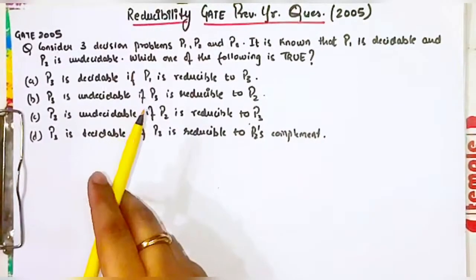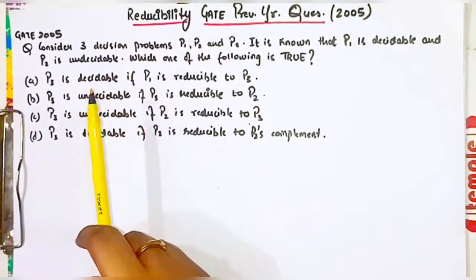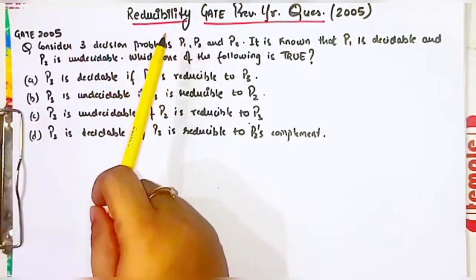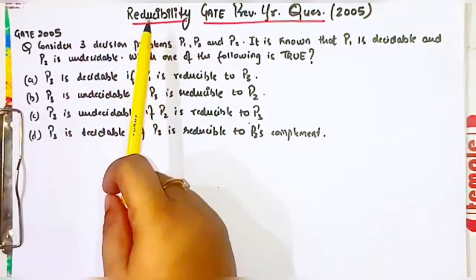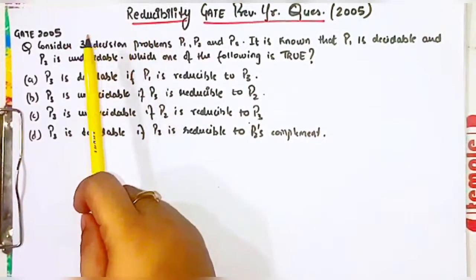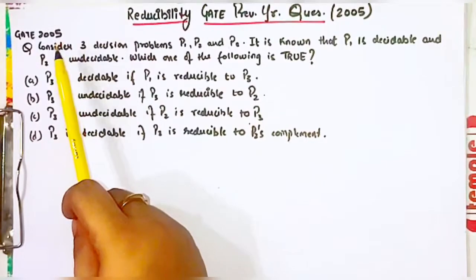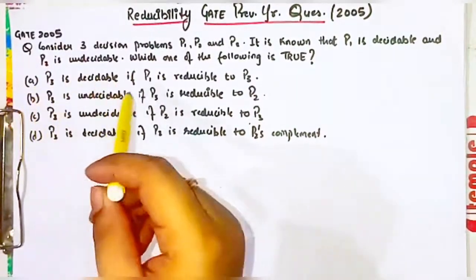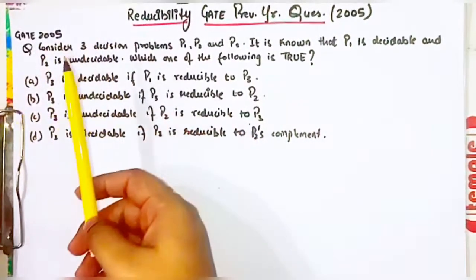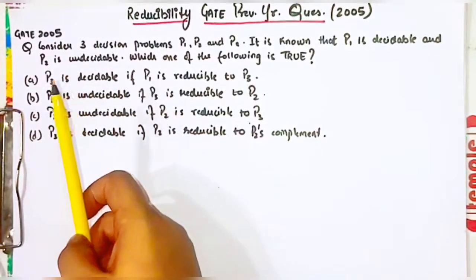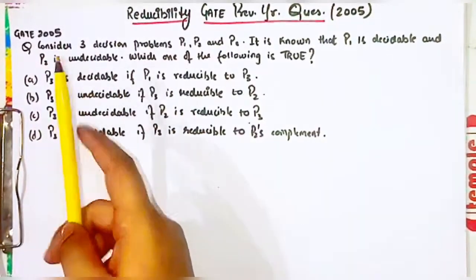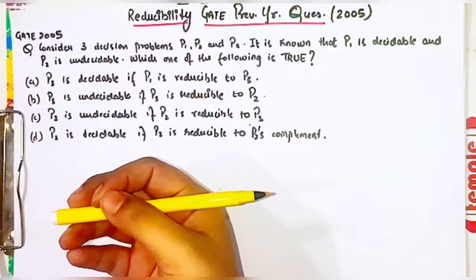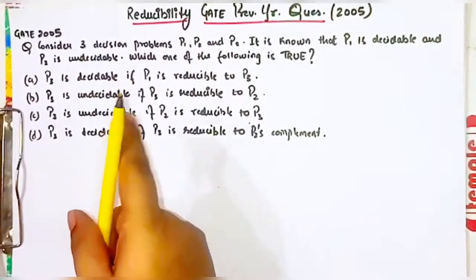Hello guys, welcome to gate4geek. In today's video we'll be solving a GATE previous year question on the topic of reducibility. It came in 2005 and it is a very good question. As in my previous video I explained the concept of reducibility with the tricky positive and negative thing — if you haven't watched that video, click the 'i' button and watch it.